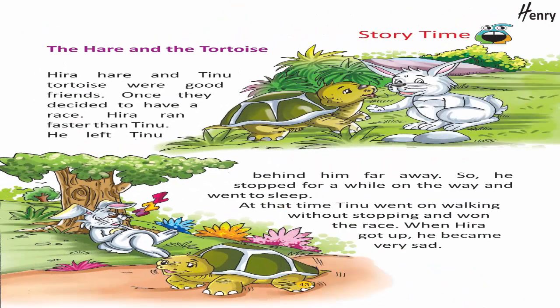Story time — The Hare and the Tortoise: Hira Hare and Tinu Tortoise were good friends. Once they decided to have a race. Hira ran faster than Tinu and left him far behind. So he stopped for a while and went to sleep. At that time, Tinu kept walking without stopping and won the race. When Hira got up, he became very sad.